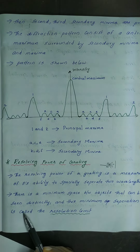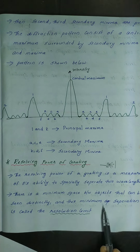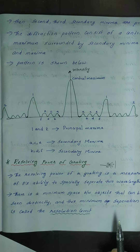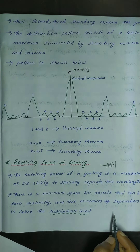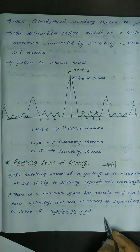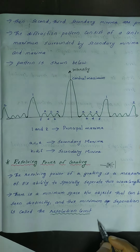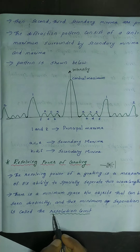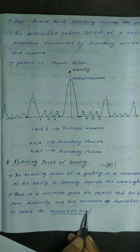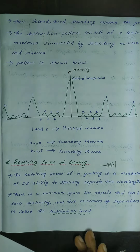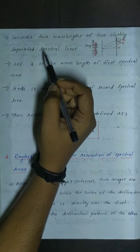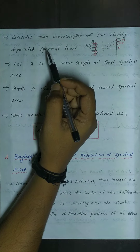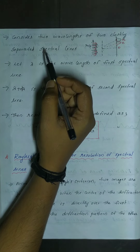That can be seen distinctly. And this minimum separation is called the resolution limit. The two wavelengths are said to be specially separated when they meet the resolution limit criterion.